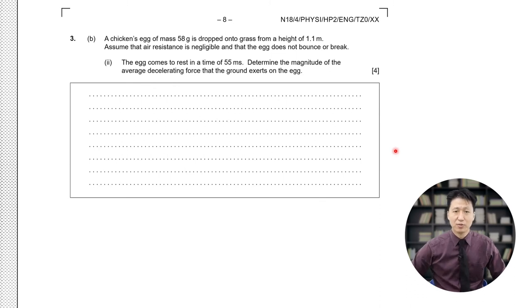So on question 2 it says the egg comes to rest at a time of 55 milliseconds. Determine the magnitude of the average accelerating force that the ground exerts on the egg. And there are two ways to solve this. First way, we can use impulse and time. Force will equal the impulse divided by the time, as shown here.